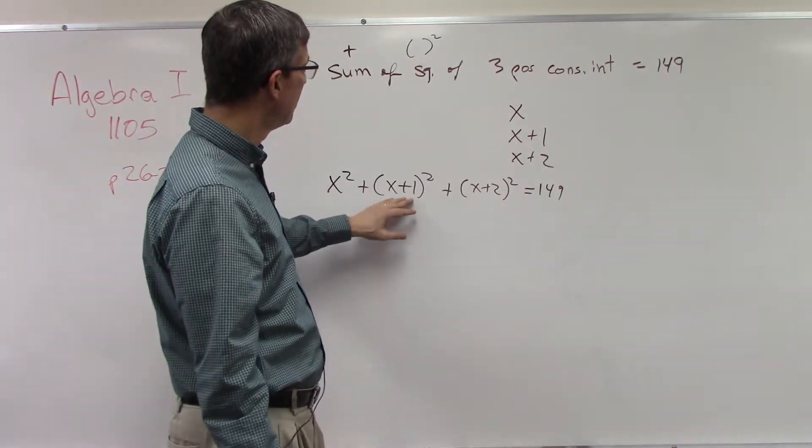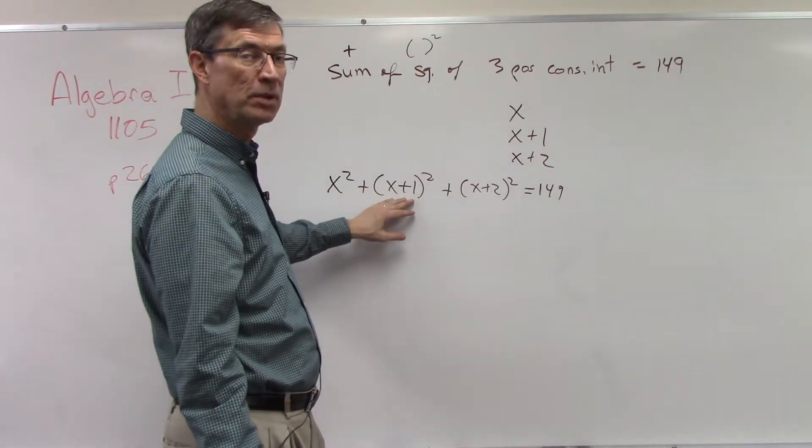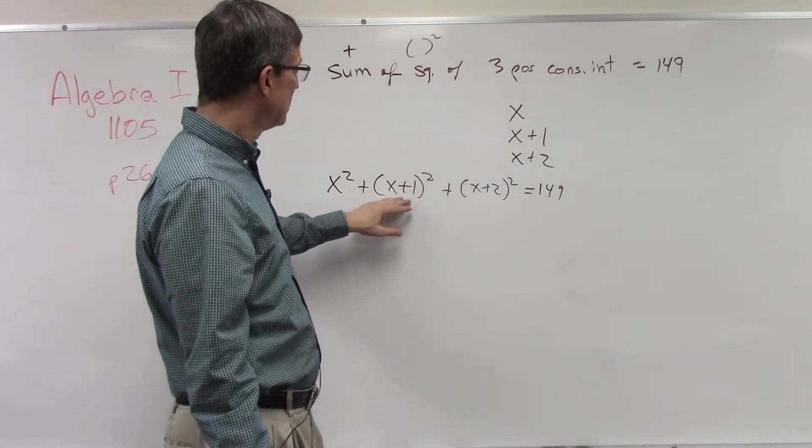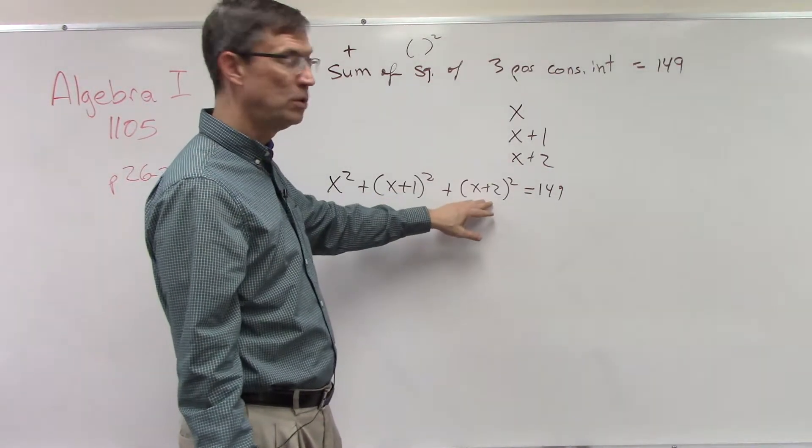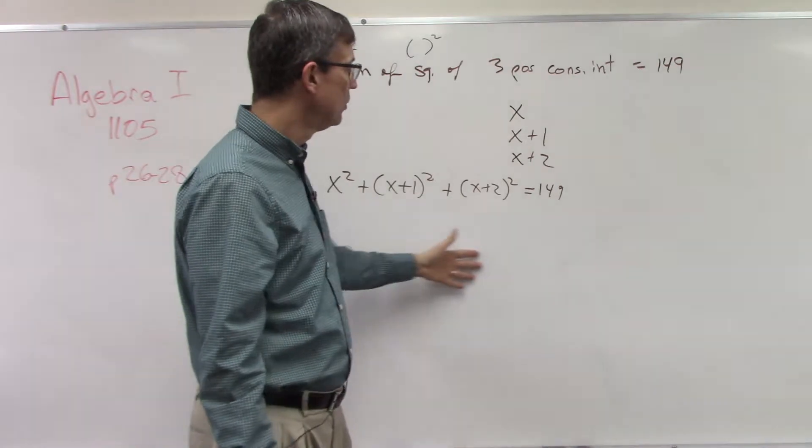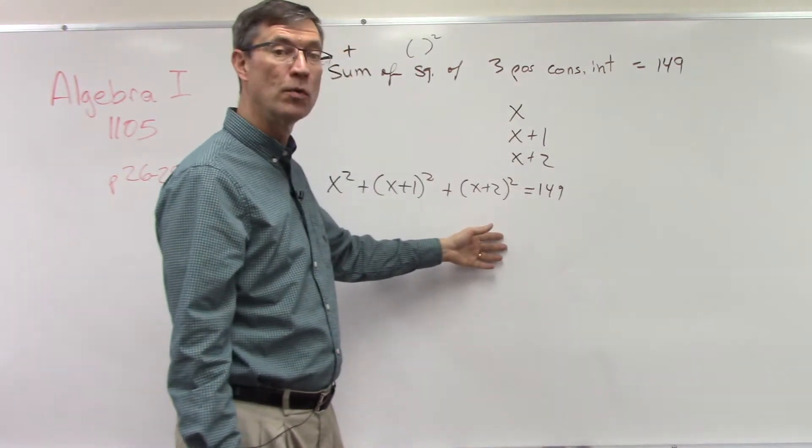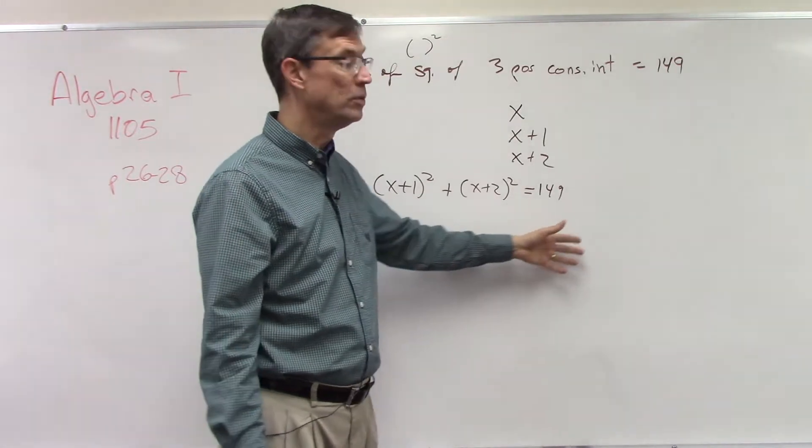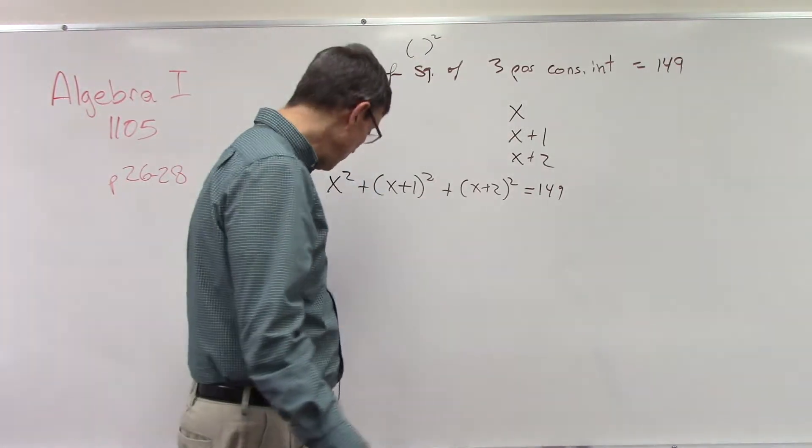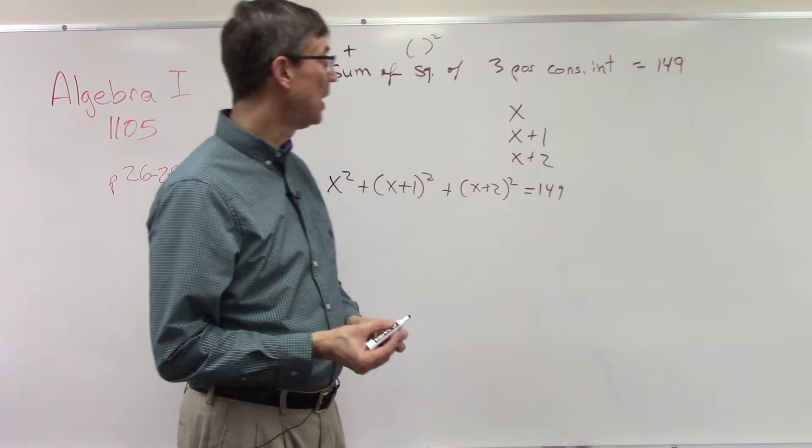x+1, we do that times x+1. Here we're doing x+2 times x+2. We're gonna have a lot of terms here. We just combine the like terms, bring the 149 over, minus 149 equals 0.